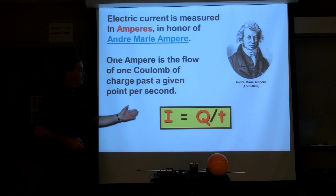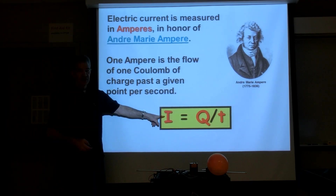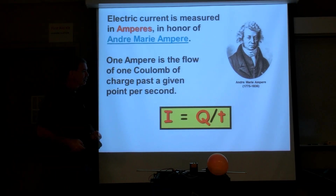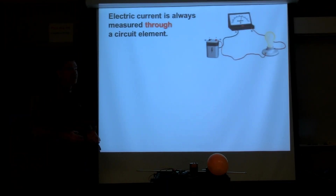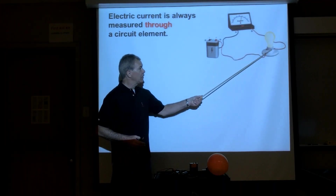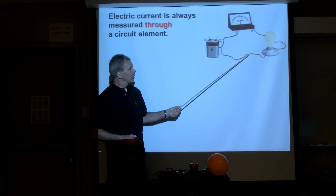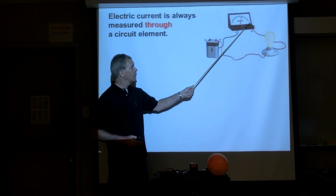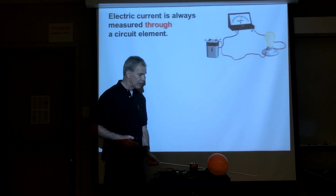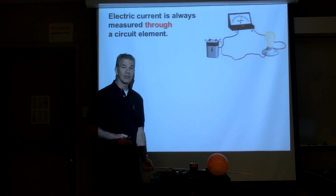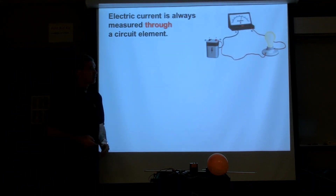The formula we use: if current is charge per time, we use I for current equals charge Q divided by time T. We always measure current through a circuit element — we don't put the meter on one side and the other side; we put the meter in line with it. The current that flows through the light bulb also flows through the meter, so we always put an ammeter in series with our circuit element, right before or right after it.